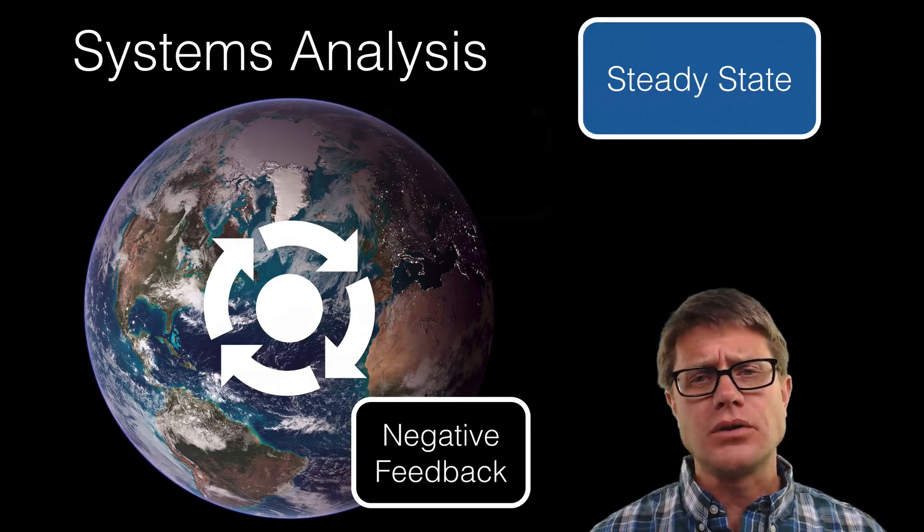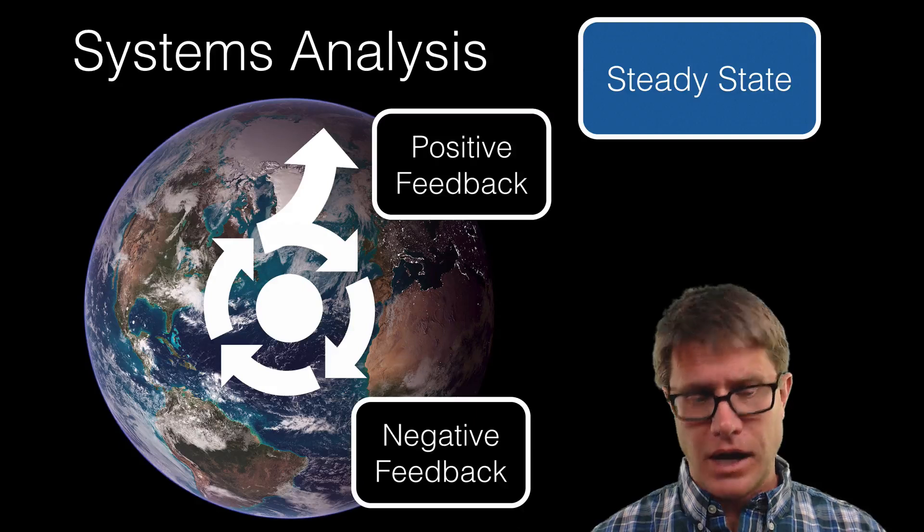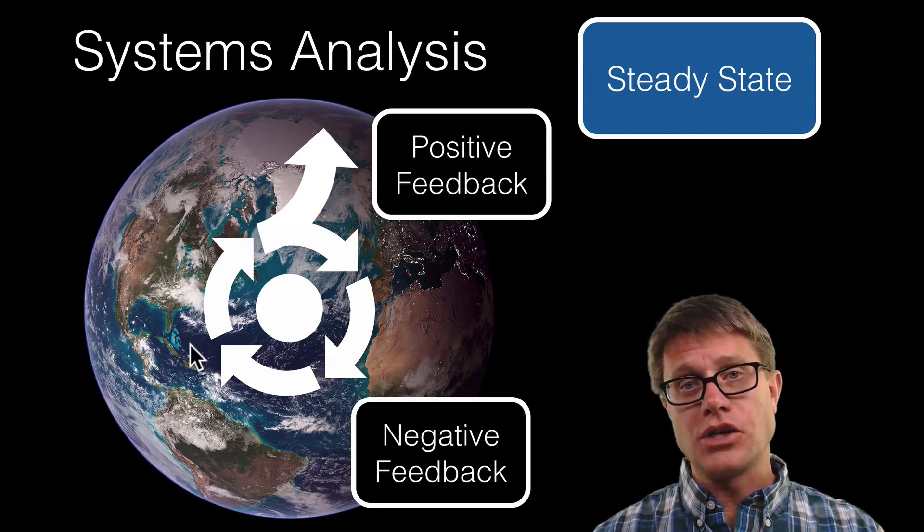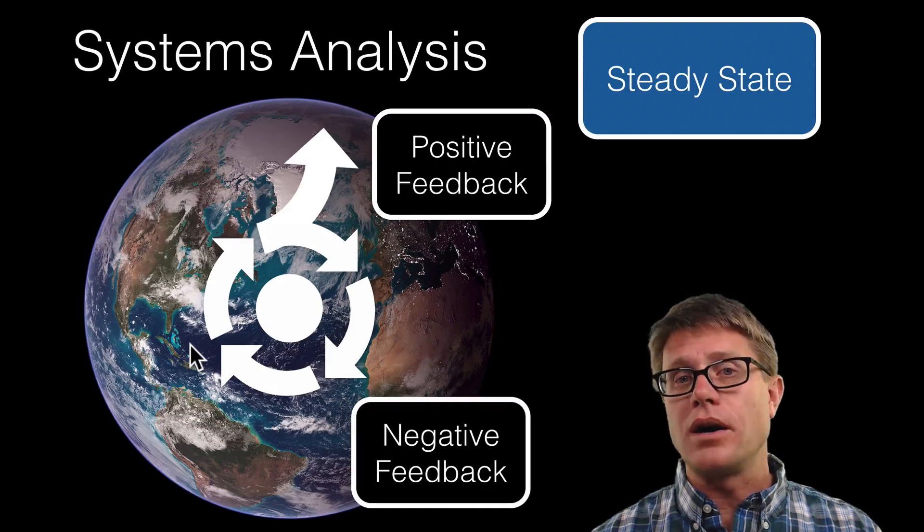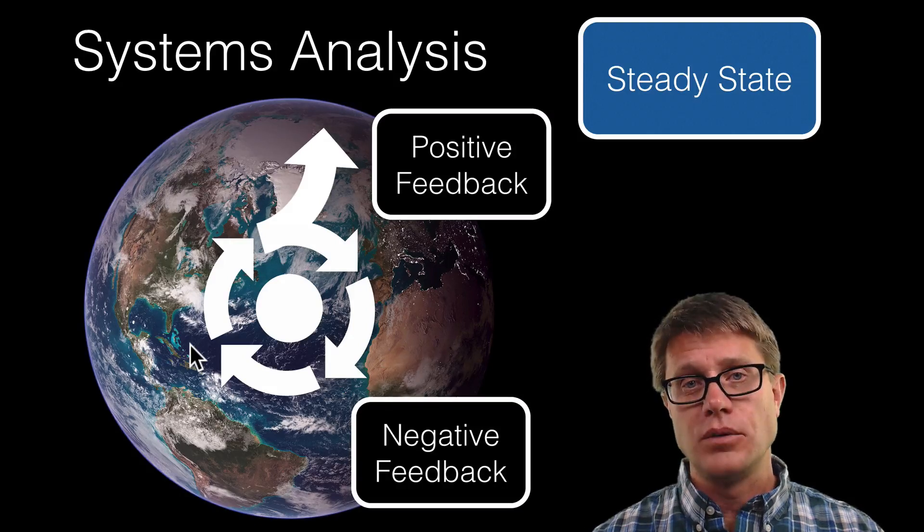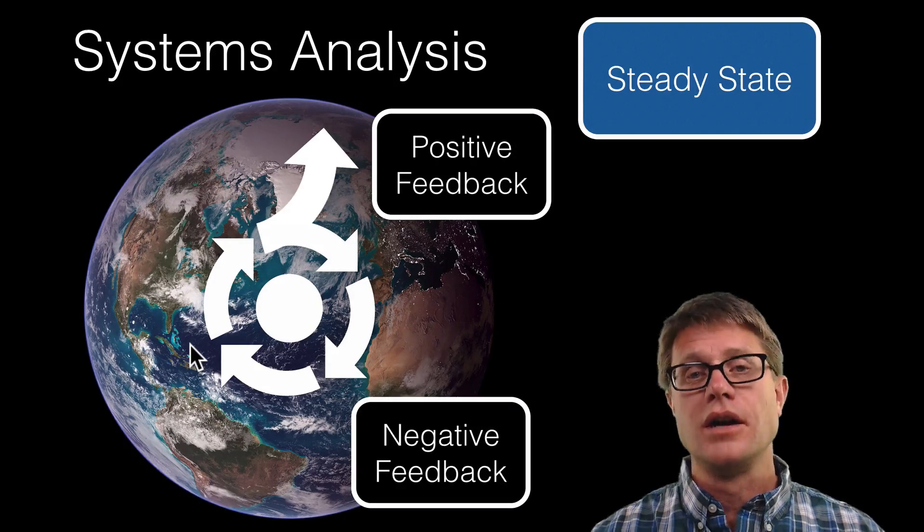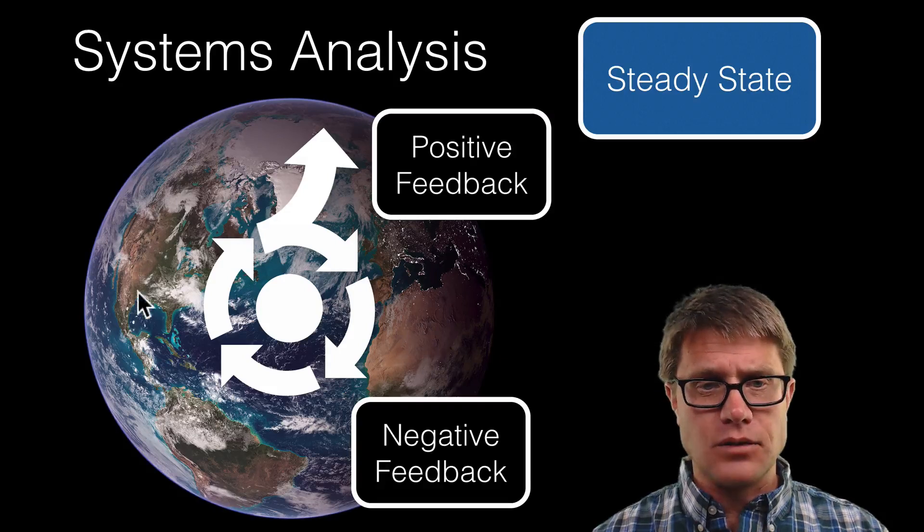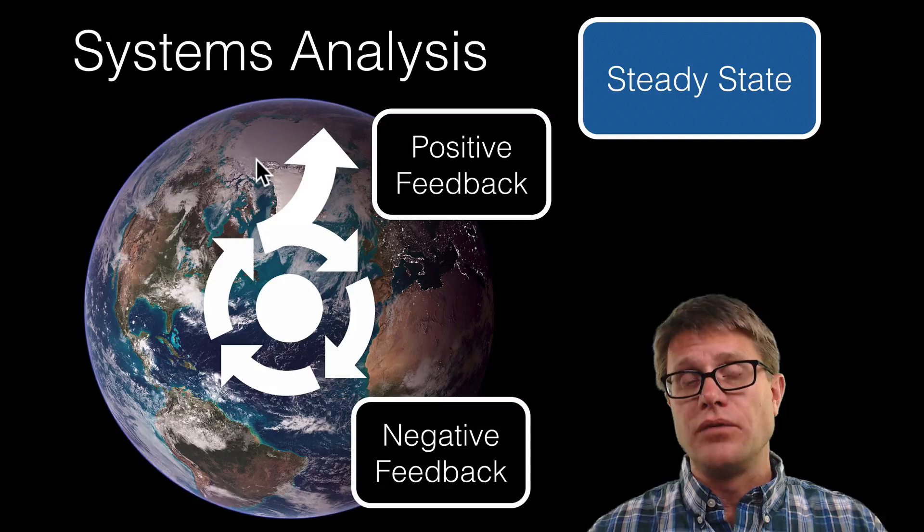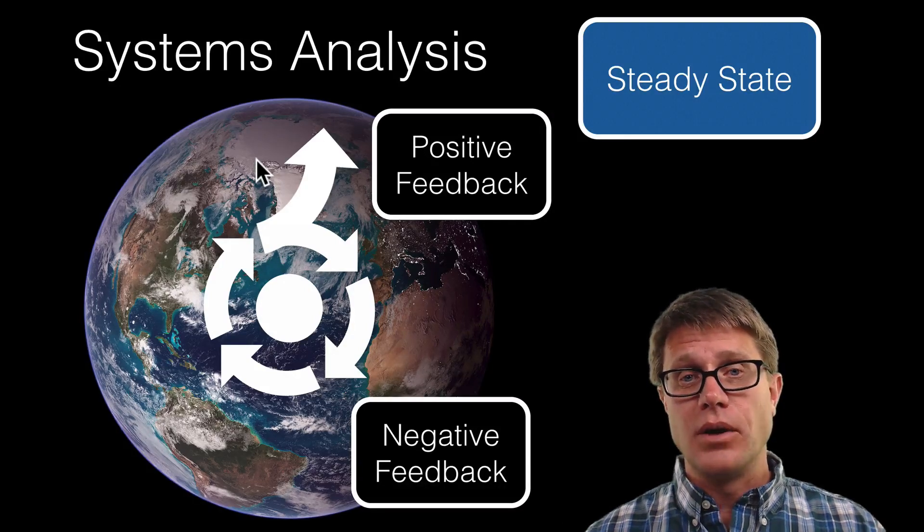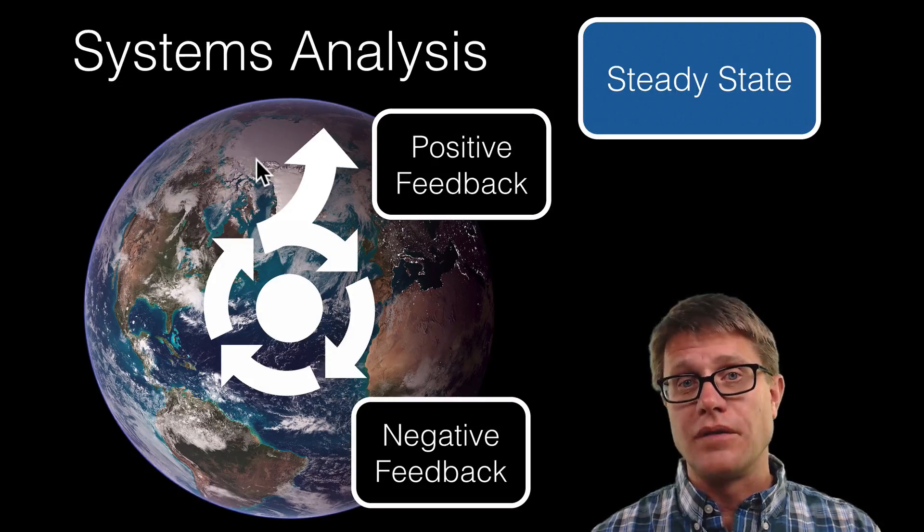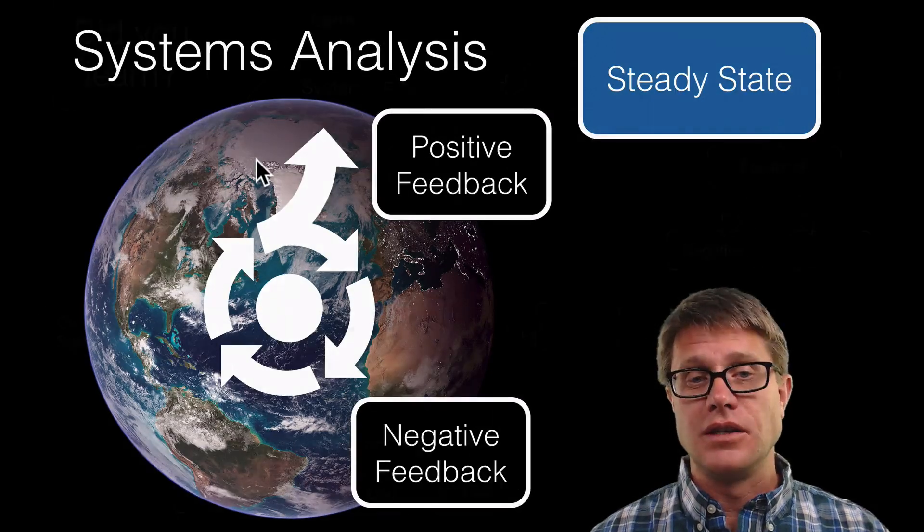The problem is that we also have positive feedback loops working on the planet right now. If we heat up the ocean, what happens? We are getting evaporation off the ocean. That creates water vapor. Water vapor is an incredible greenhouse gas. What does that do? It heats up the earth which creates more evaporation of water and more global warming. Another example, we could look at this white area up here. If we have a lot of ice that has a high albedo, it reflects a lot of the light back into space. What happens is we start to melt that ice and there is less albedo, we are absorbing more of that heat and so we are increasing the temperature.